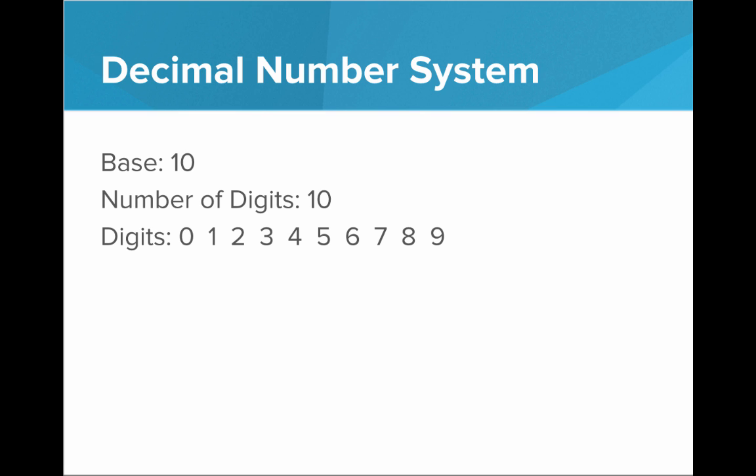So the decimal number system has a base of 10. That means that we have 10 digits to work with. We can use 0 through 9. So let's try to represent some numbers using only these digits. Well, let's start at 0 and count up. We can represent 0, we can do 1, 2, 3, 4, 5, 6, 7, 8, 9.